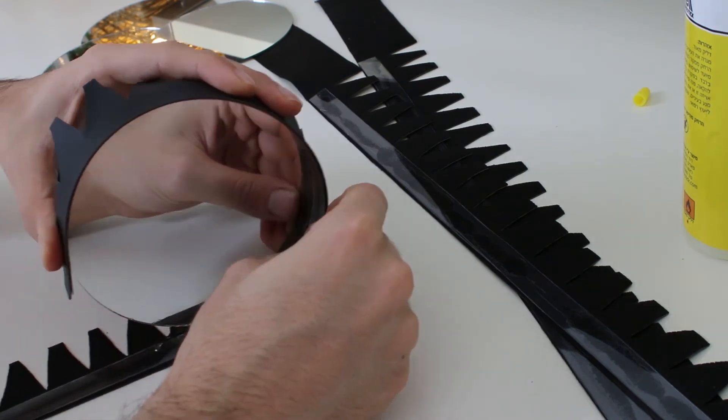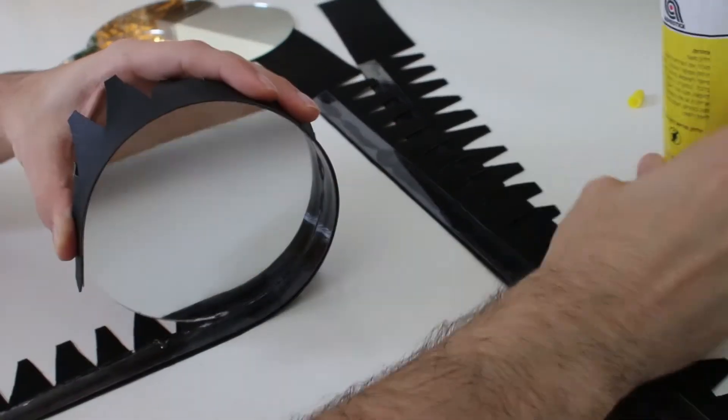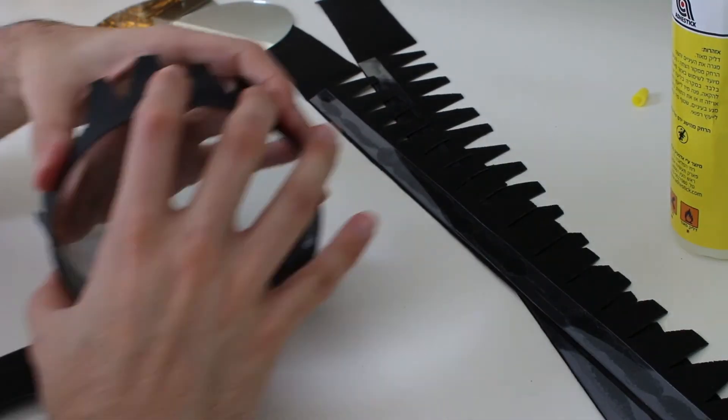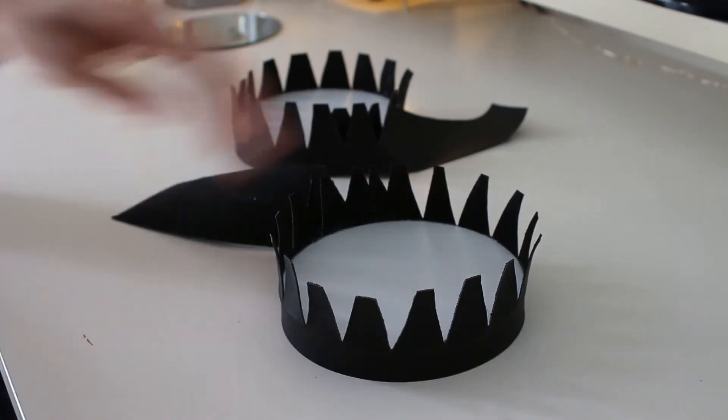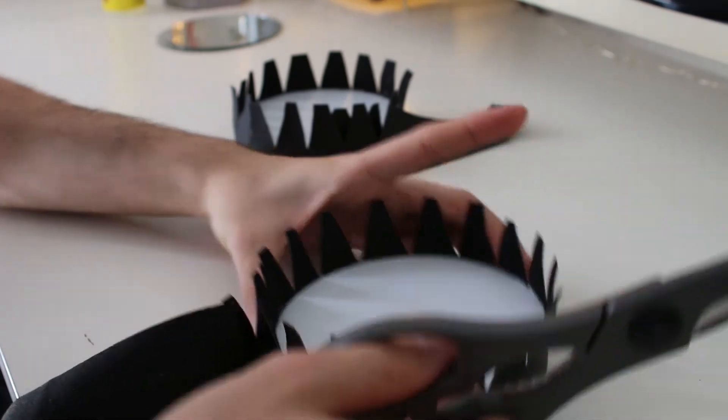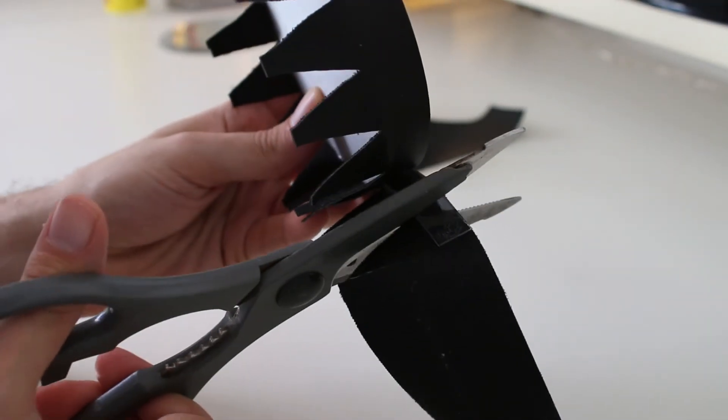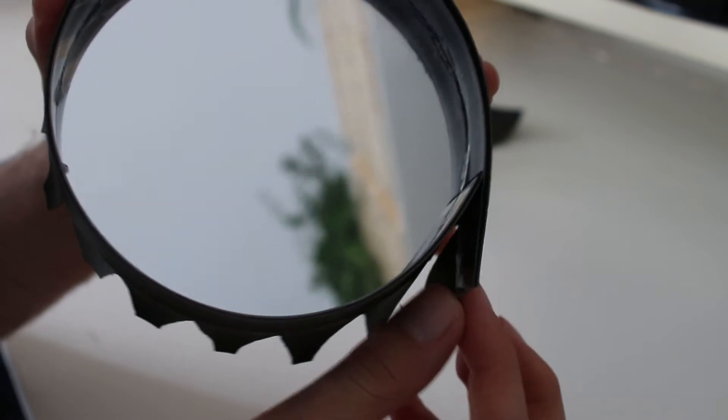You only need to hold the shape for a few minutes and then feel free to leave it to dry on the side for a few hours again. Cut the extra piece at the end and glue it all together.